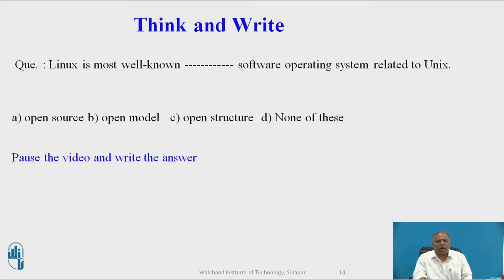Question for students: Linux is the most well-known blank software operating system related to Unix. Option A: open source, Option B: open model, Option C: open structure, Option D: none of these. The correct answer is Option A — open source. Linux is the most well-known open source software operating system related to Unix.